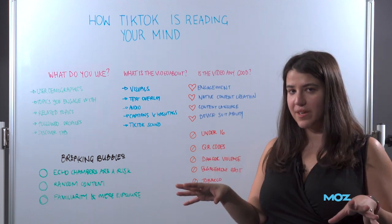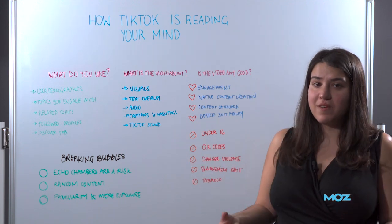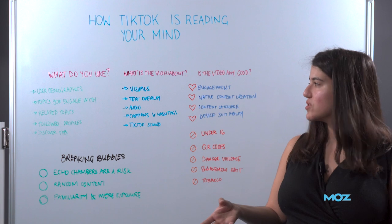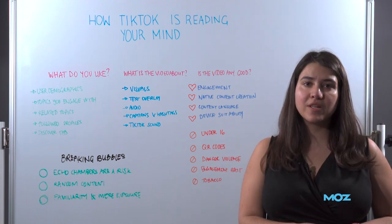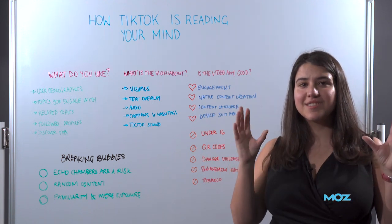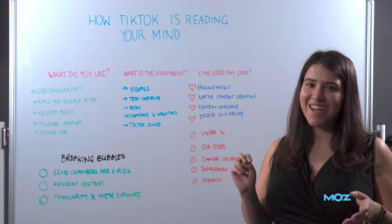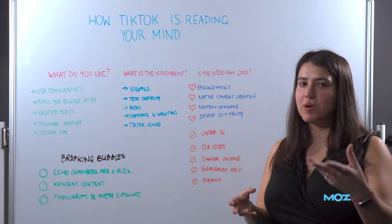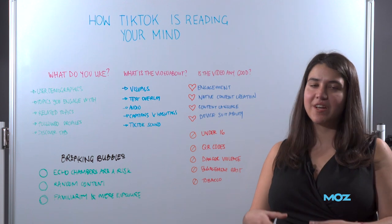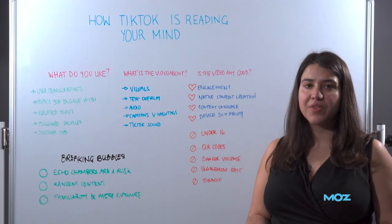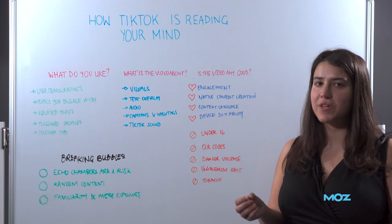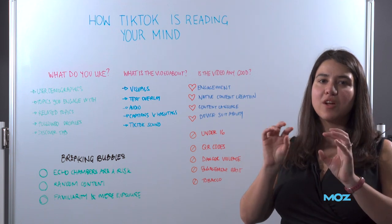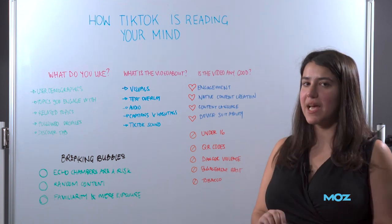Now that TikTok knows what you like, they need to understand what the videos in their content database are about. To do that, they use visuals — TikTok can literally see with a visual AI the content of your video: what objects are in there, are there faces, what are the emotions on those faces, is there a dog, is there a chair. Another strong signal is the text overlay you put on your TikTok video — any notes or content added, or manually inputted captions.